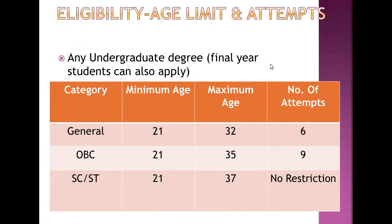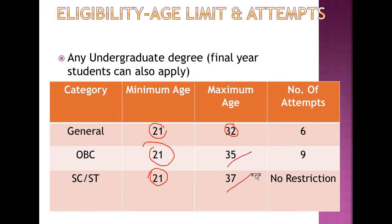Regarding eligibility, age limit, and attempts for the Civil Services Examination — as per your category, the minimum age is 21 years for all categories. The maximum age limit varies: General merit is 32, OBC is 35, and SC/ST is 37. The number of attempts also varies: SC/ST has no restriction, General merit gets only 6 attempts, and OBC gets 9 attempts.